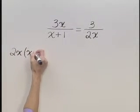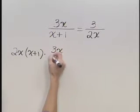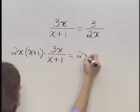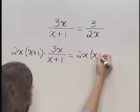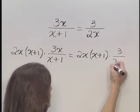2x times x plus 1 times the left hand side, the 3x over x plus 1, is equal to 2x times x plus 1 times the right hand side of the equation, the 3 over 2x.